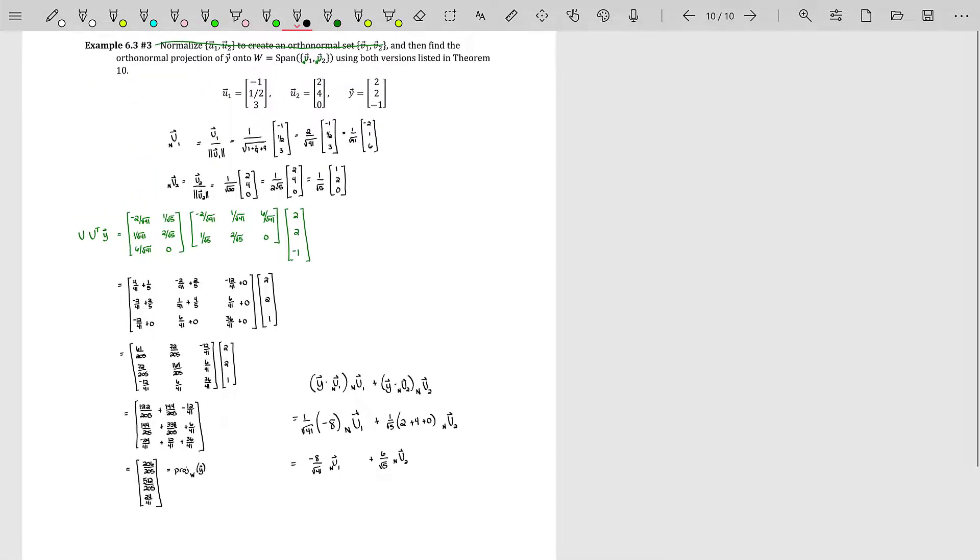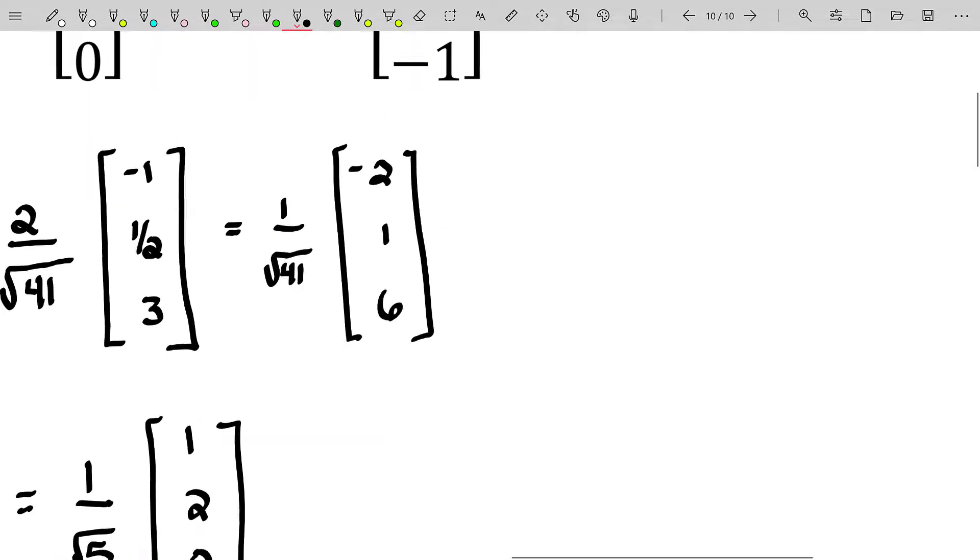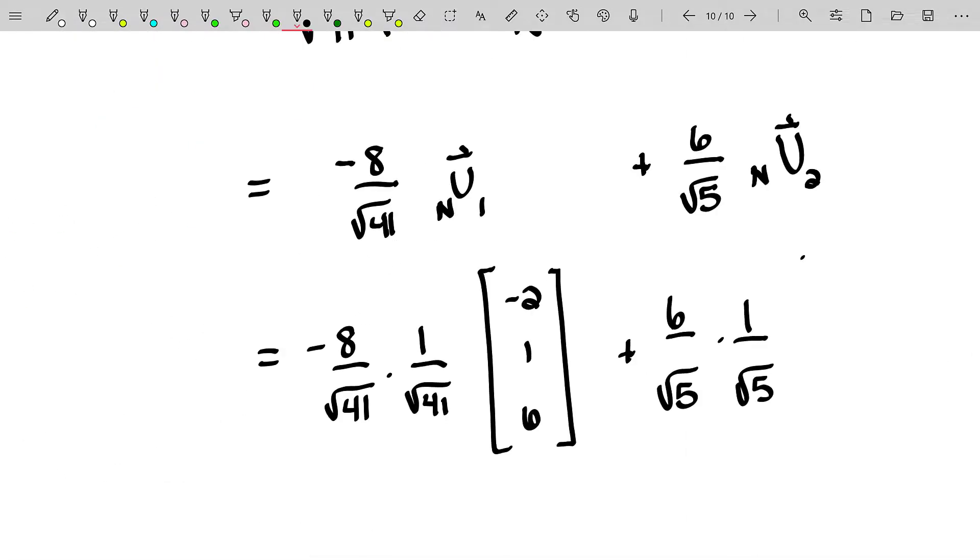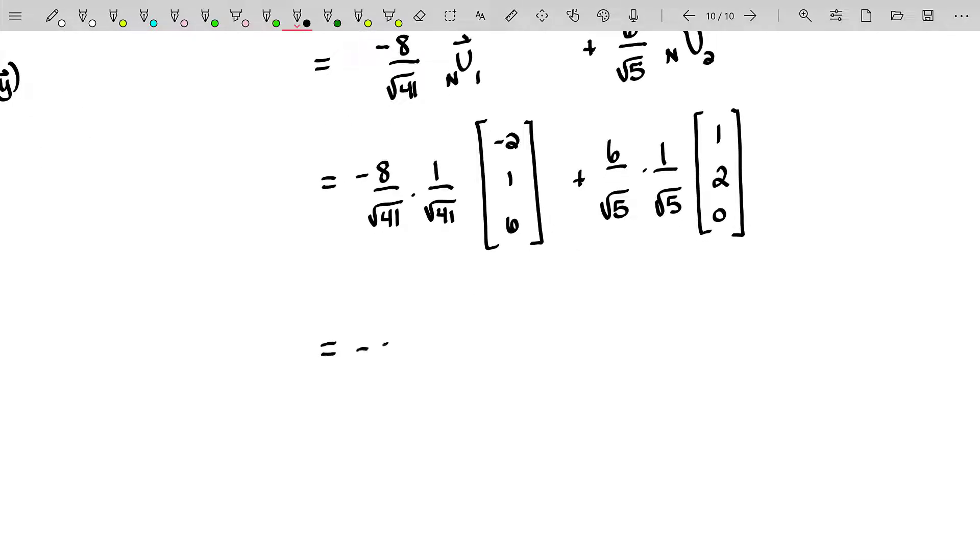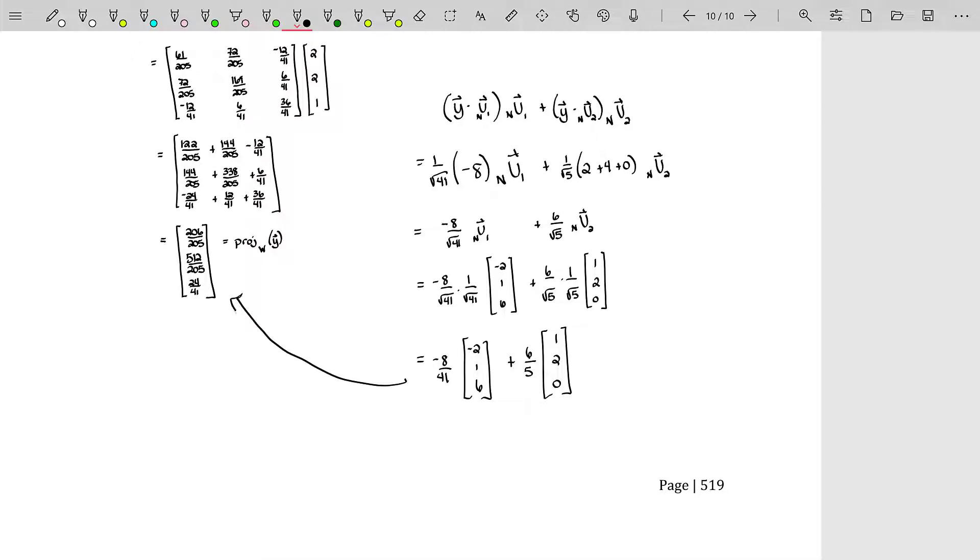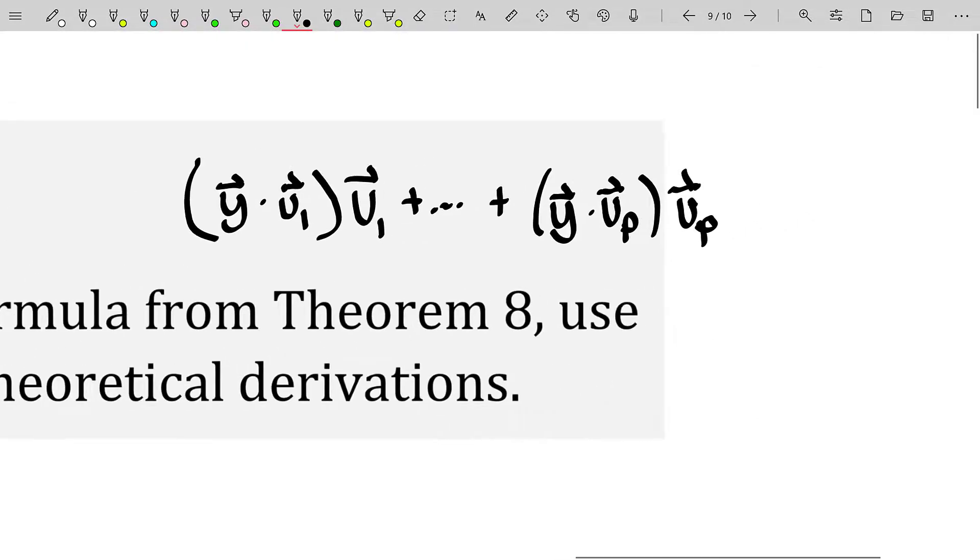This ends up being negative eight over root 41 times our normalized vector u sub one plus six over root five times our normalized version of the vector u sub two. So you could see that what we were saying earlier does match. We definitely prefer this tactic over the very first tactic. Now substituting in the vector, the normalized vector for u sub one. And note that the normalized vector for u sub one has yet another one over root 41. And we get down to that right there. You can see how much nicer this is than the previous method. And we get negative eight over 41 times negative two, one six. And then this business right here, that's actually not too bad. You can always find the LCD and add them up. It will actually become this, but this actually showcases exactly what I want us to see, which is the following.